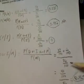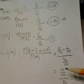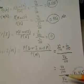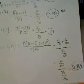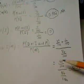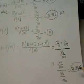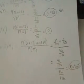Simplifying the numerator gives us 40 out of 100, and the denominator is 86 over 100. Simplifying this fraction further, we get 0.465 as our final answer.